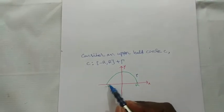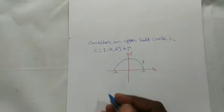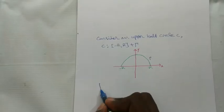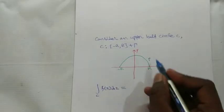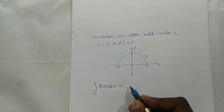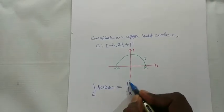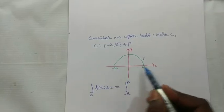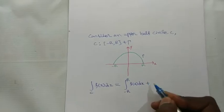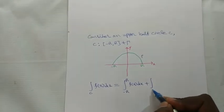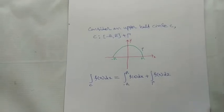So C is from minus R to plus R and gamma (the curved region). From the diagram, the integral over C of f(z) dz represents the entire half circle, which equals the integral from minus R to plus R of f(x) dx plus the integral over gamma of f(z) dz.